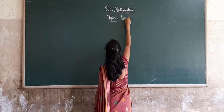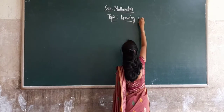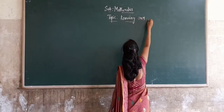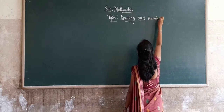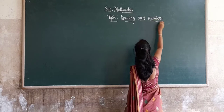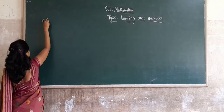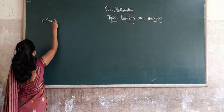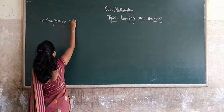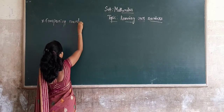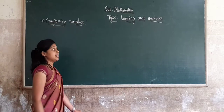In the chapter Knowing Our Numbers, the first topic is comparing numbers. In comparing, we have to identify the greatest and smallest number.